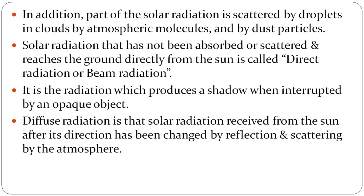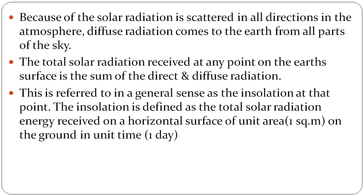Coming to diffuse radiation — we receive solar radiation, but reflection and scattering by the atmosphere change the direction of the radiation. This is what we call diffuse radiation. Direct radiation and diffuse radiation scattered from the sky combine together to give us the total solar radiation received at the surface.